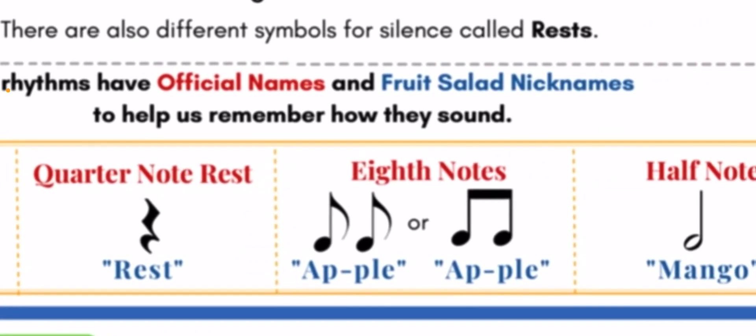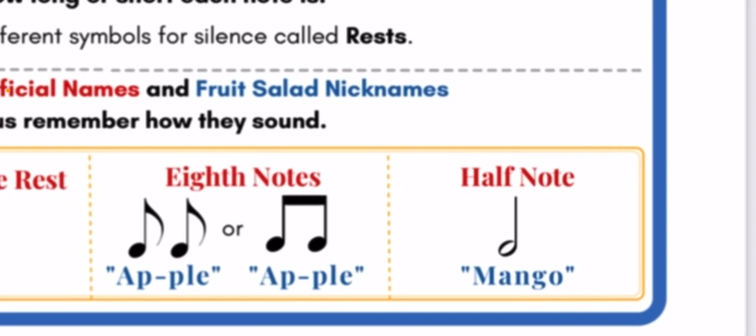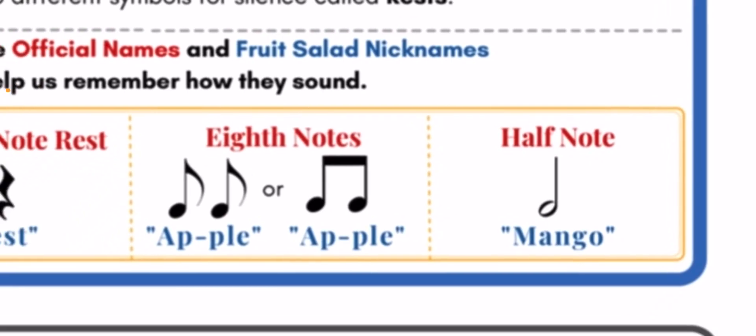Eighth notes look like two quarter notes hooked together with a flag at the top, or they can just have a flag hanging if they're by themselves. Our word for them is 'apple,' and each of the eighth notes gets a syllable — apple, apple. Half notes look like a quarter note except they are hollow and they get two beats. Their nickname is 'mango' and you stretch that out — mango — for two beats.